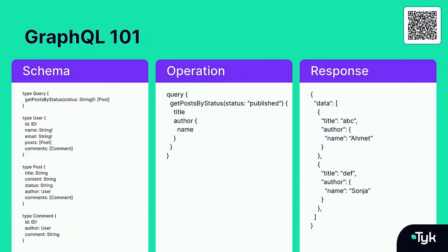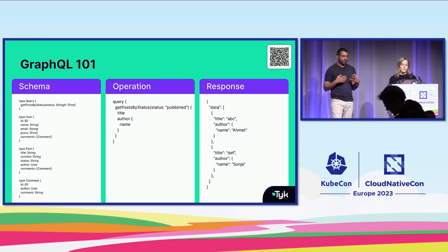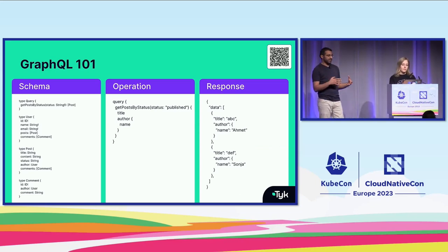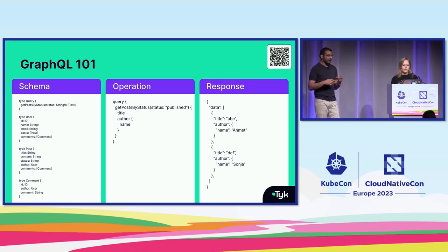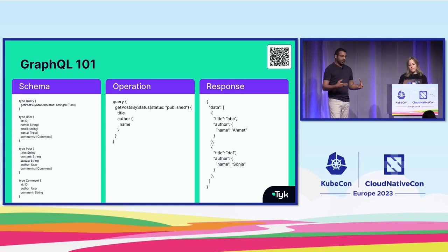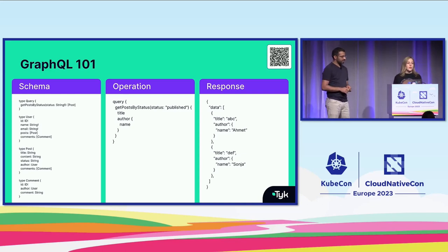Now that you know a little bit about what problems GraphQL solves, let's look at what GraphQL looks like. We can see an example schema, a query operation, and an example response. You'll see that your GraphQL request syntax conveniently mirrors the shape of the JSON you'd expect in the response. For API consumers, they can request exactly the data they need — nothing more, nothing less. For API producers, they can define their schema and write clever code or use a tool like Tyk to dynamically resolve those requests.